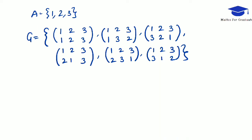Welcome to HMI Maths for graduates. In the previous video, we have seen that for the set A containing three elements, we have formed a group G containing all the permutations. This is a group containing all the permutations for the set A, and it is known as a permutation group.